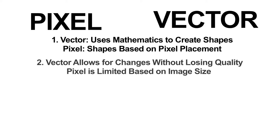Two: vector-based masks allow for changes to be made without limiting the size of the image, while pixel-based masks are limited to the pixel count.